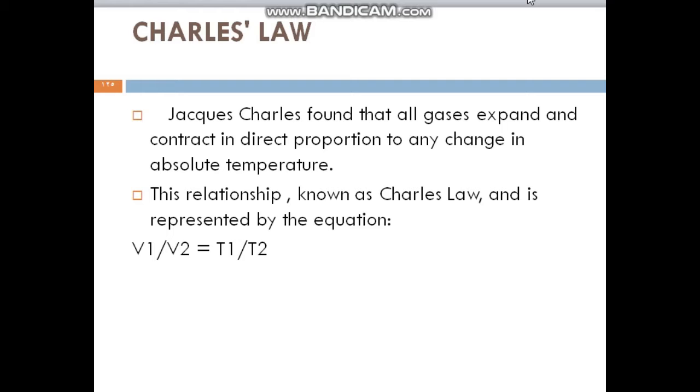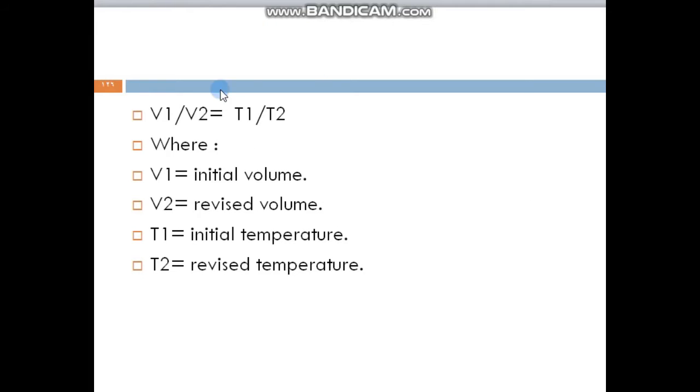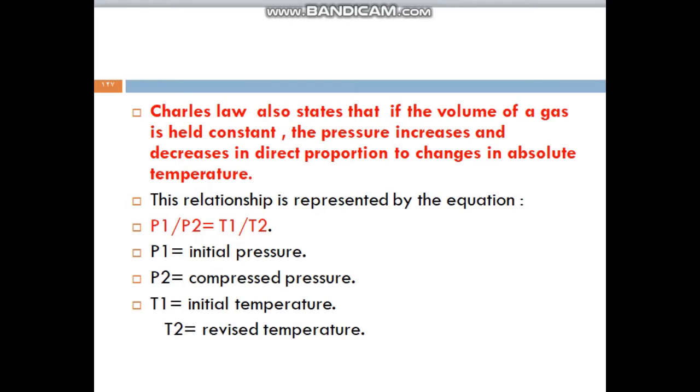This relationship, known as Charles' Law, is represented by the equation: V1 divided by V2 equals T1 divided by T2. V1 is the initial volume, V2 is the revised volume, T1 is initial temperature, and T2 is the revised temperature.